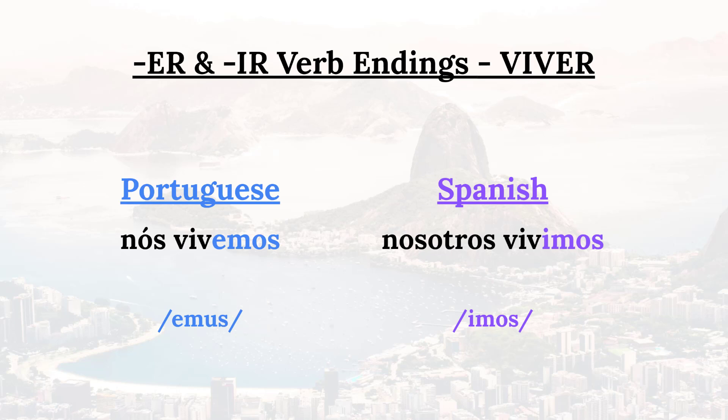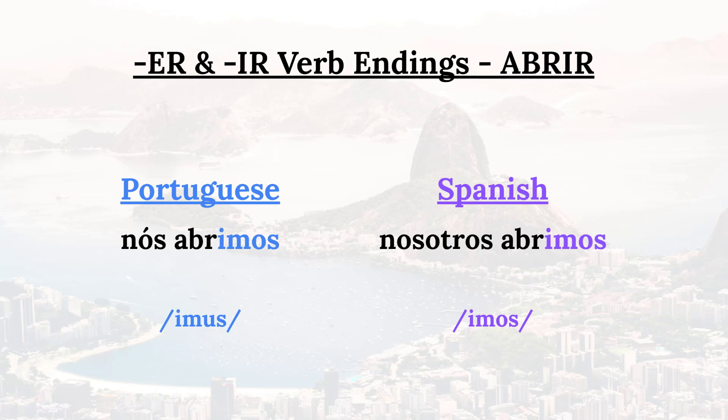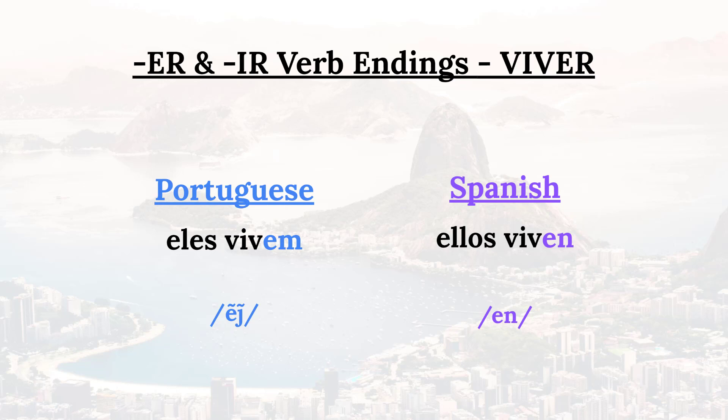Here in the first person plural is where the endings for ER and IR verbs differ. For ER verbs the ending is '-emos,' so 'we live' is 'nós vivemos' — notice how the O is pronounced like a 'u.' Then for IR verbs like 'abrir' — to open — the ending is '-imos,' as in 'nós abrimos.'